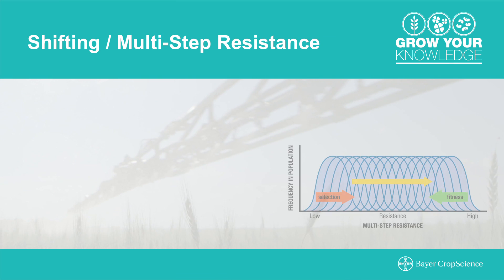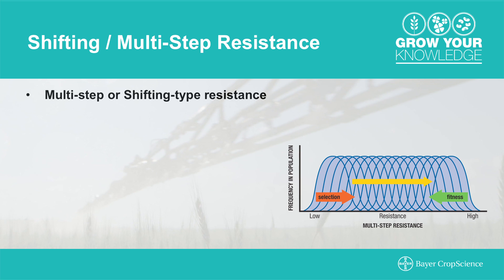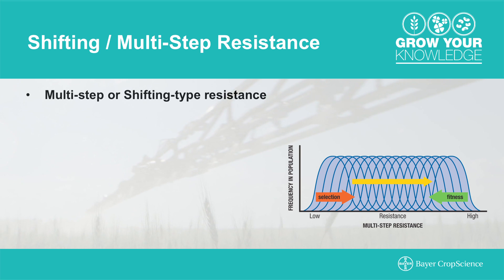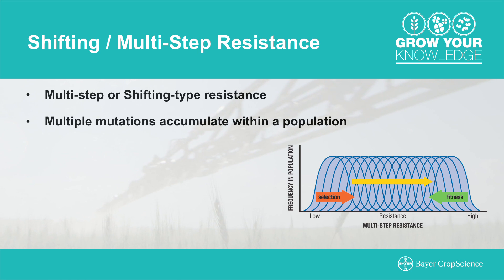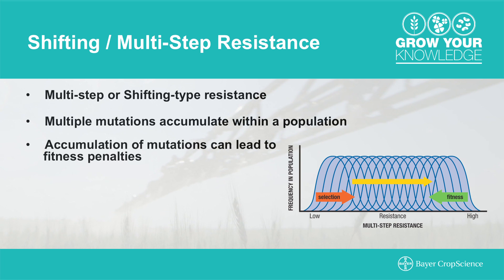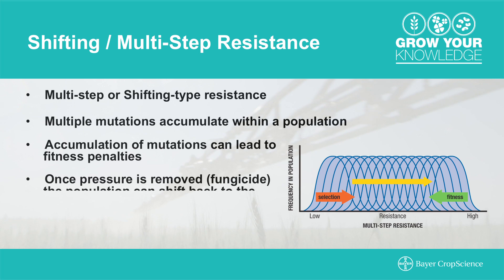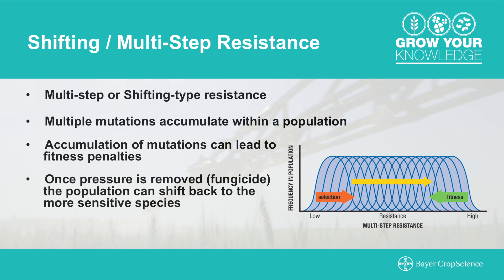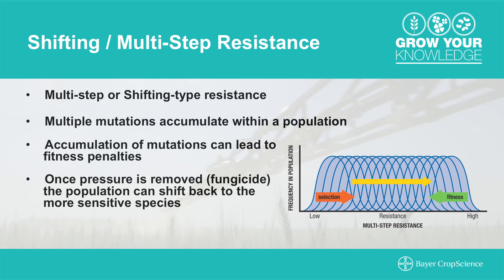With triazoles, or Group 3s, resistance is a little different — it's termed multi-gene or shifting-type resistance. To confer 100% resistance, you need up to four mutations on four different genes. What often happens is a stepwise erosion of control: you get a single mutation and lose a little efficacy, then another mutation and lose a little more. But if you remove the selection pressure of the fungicide, you'll often get a shift back to more sensitive species where triazole chemistry will work again, because accumulated mutations often create a less fit pathogen.